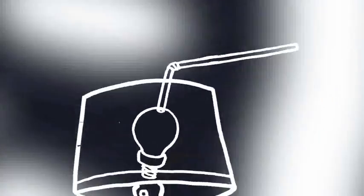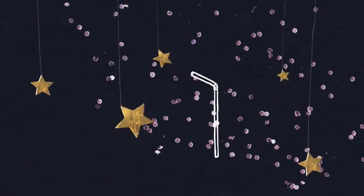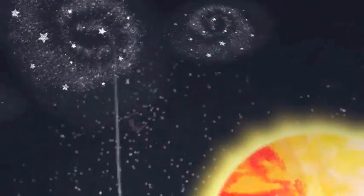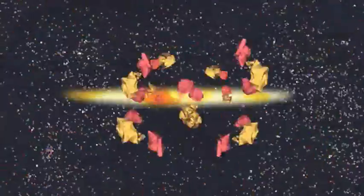Black holes cannot be seen because they suck in light. They make stars near them wobble and make a galaxy spiral. Black holes are made when a huge star dies.